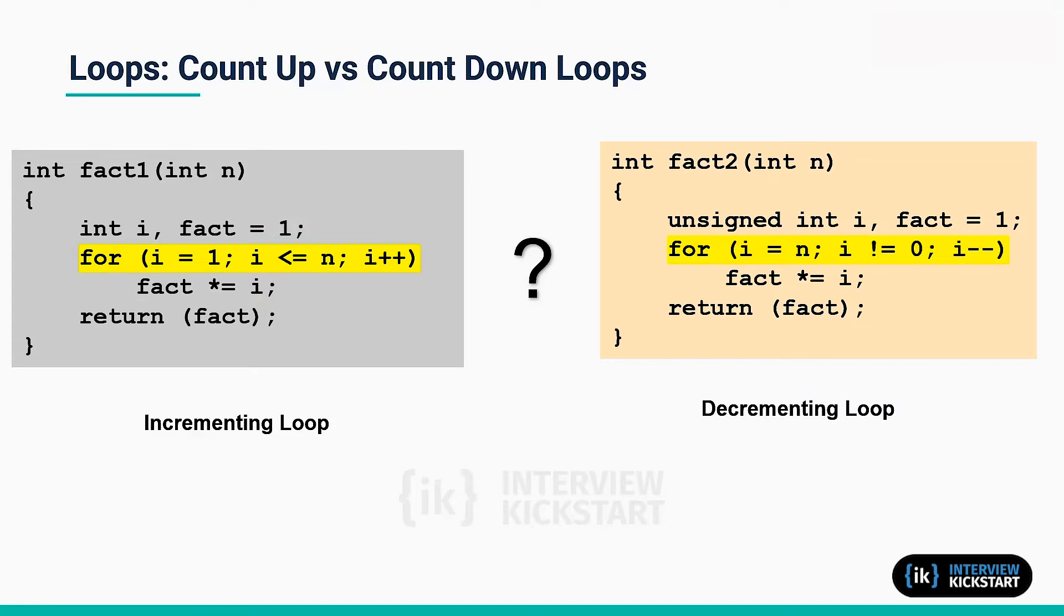On the left hand side there are two variables i and n in the comparison operation i less than or equal to n. Now on the right hand side there is a comparison with zero, whether i is not equal to zero. Therefore it seems the compiler can generate efficient code by avoiding one comparison operation.